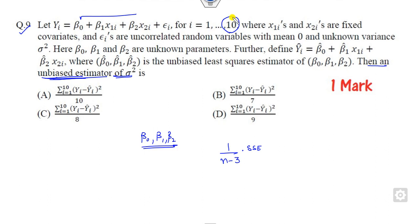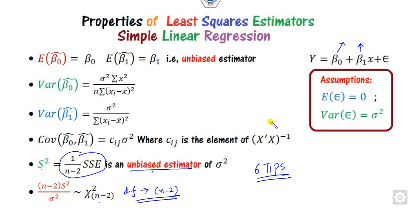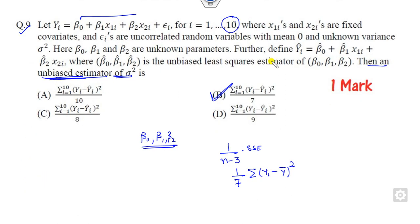Here n is 10, so the answer is 1 by 7 times SSE — specifically involving the sum of (y_i minus y-bar) squared. So the correct answer is 1/(n-3) SSE. You can see how just one of the six tips is sufficient to solve this, making it quick and easy.